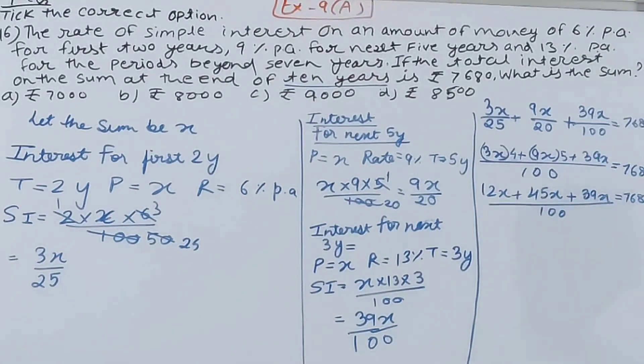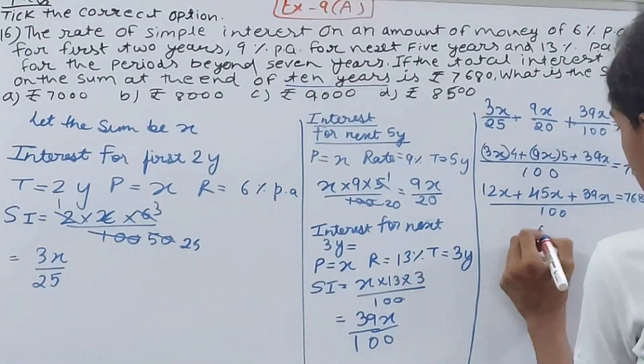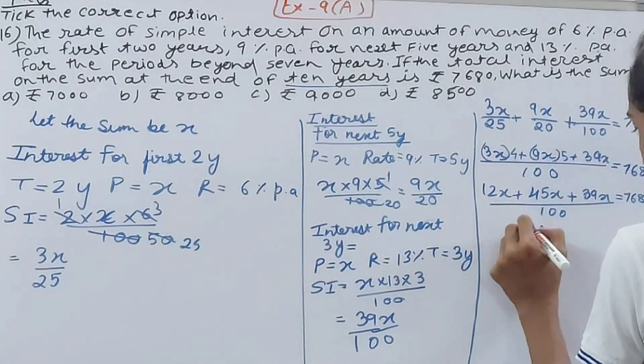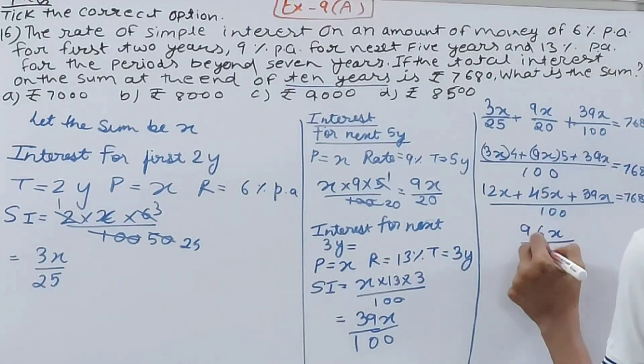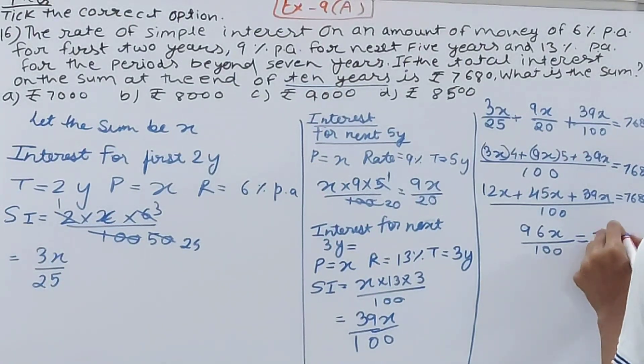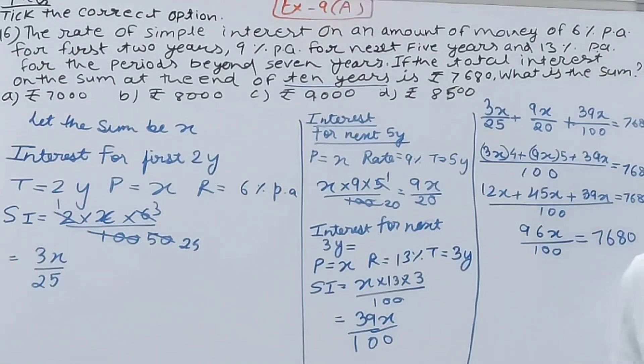This is 12x and 45x is 57x. 57x and 39x, that is 9 and 7, 16 and 1, 5, 5, 3, 8, and 1. So 96x by 100 is equal to 7680.